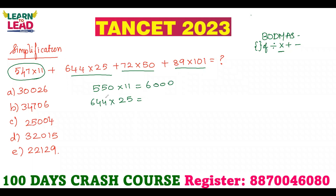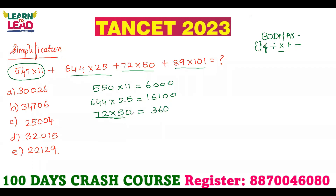644 into 25 — if you multiply a number by 25, you can use a shortcut: divide the number by 4. So 644 divided by 4 is 161, then multiply by 100 — that gives 16,100. Then 72 into 50 — any number into 5 is half the number. 72 into 5 is 36, so 72 into 50 is 3,600.